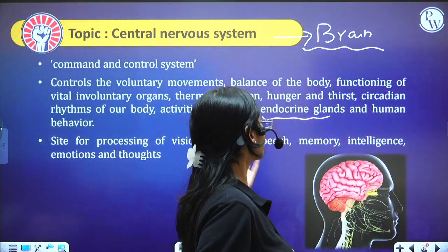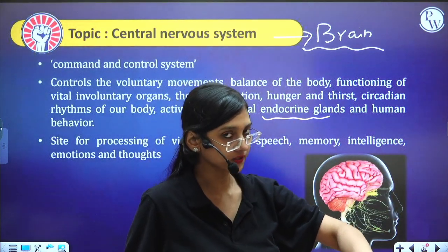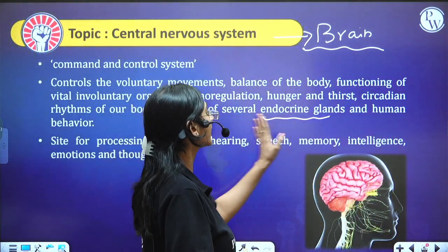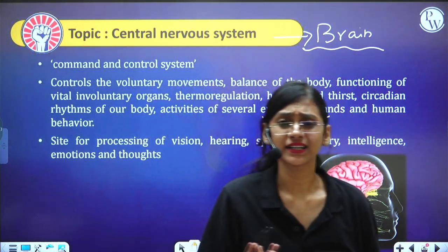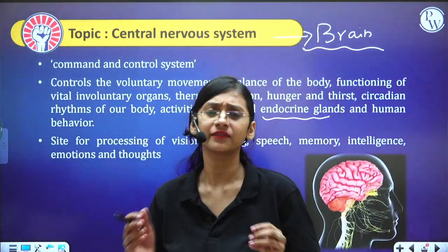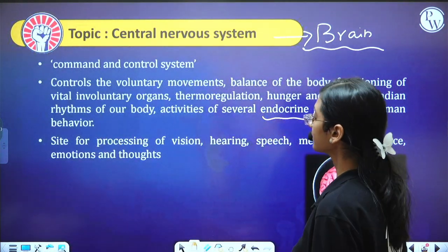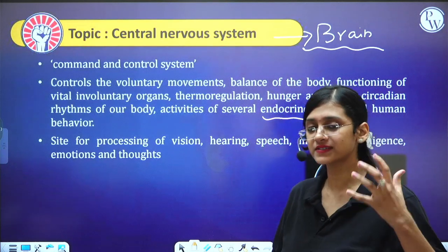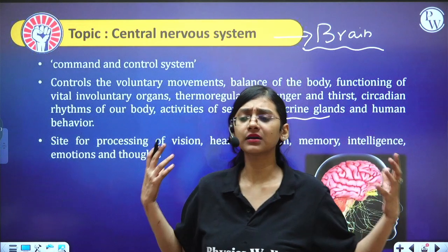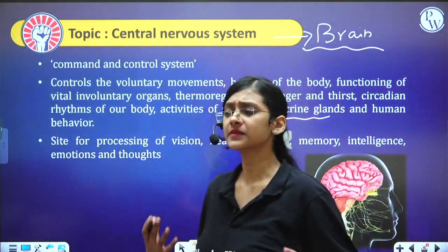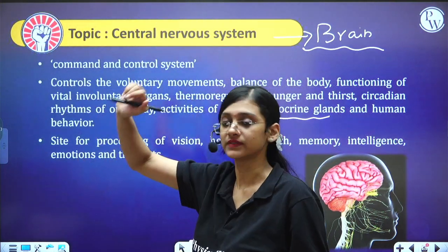The endocrine glands are controlled by the brain. Additionally, human behavior, processing of vision, hearing, speech, memory, emotional and behavioral responses — all types of control — are managed by the brain, which is the Central Nervous System.